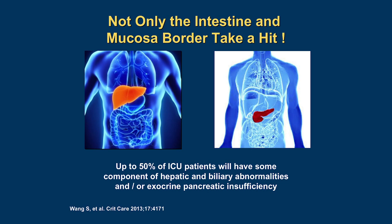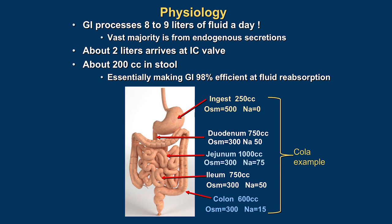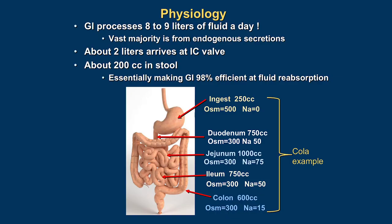A key thing here is what happens in transition. For example, if you drink a Coca-Cola, it has an osmolality of about 500 milliosmoles. When that hits the stomach, the stomach says that's way too much sugar to dump into the intestine, so the body is required to dilute it by about half. Your 254 cc Coke at 500 osmoles now becomes about 500 cc's. Then that volume goes to the duodenum, where we have to secrete more sodium to get the sodium up to where it can reabsorb, and now that 250 has become 750.